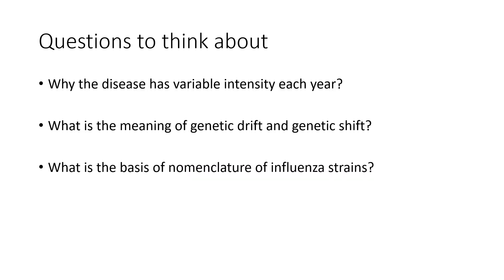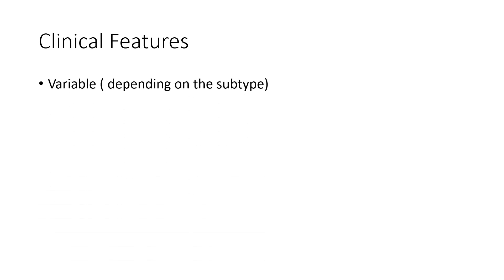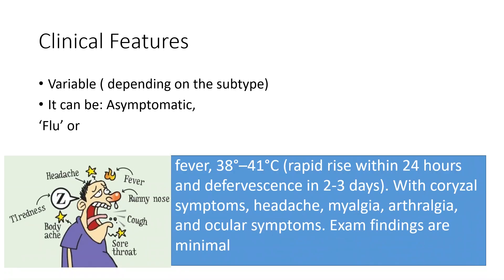The nomenclature of influenza strains: they are named according to the place in which they are first discovered. Clinical features are variable and depend on the subtype. The infection can be asymptomatic or it can present as the flu.